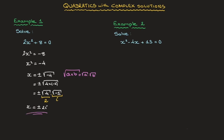And we're done. To be clear, we have two solutions here: x equals negative 2i, and x equals 2i. It's worth pointing out that these two complex numbers are the complex conjugates of each other. In fact, when solving quadratic equations with complex solutions, that will always be the case — the two solutions will always be complex conjugates of each other.